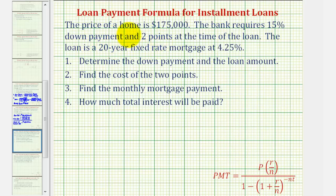The price of a home is $175,000. The bank requires 15 percent down payment and two points at the time of the loan. The loan is a 20-year fixed-rate mortgage at 4.25 percent.